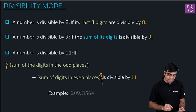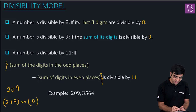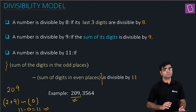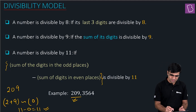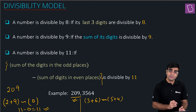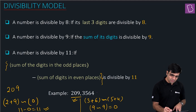Let's check with examples. Take 209: the sum of digits at odd places is 2 + 9 = 11, and the sum at even places is 0. So 11 − 0 = 11, which is clearly divisible by 11. Hence 209 is divisible by 11. Now take 3564: the sum of digits at odd places minus even places gives 9 difference 9 = 0, which is clearly divisible by 11. Hence 3564 is divisible by 11.